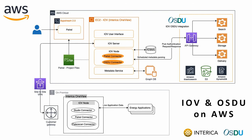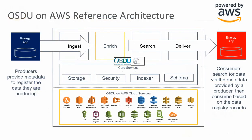Interica's IOV is integrated with OSDU on AWS to seamlessly search and deliver data stored in OSDU, making it available to end customers through the IOV platform. OSDU on AWS is inherently secure and is differentiated because of the seamless integration and robustness of the AWS cloud services built on the AWS well-architected framework pillars. The first pillar is operational excellence: OSDU on AWS provides a single-click deployment into your AWS environment so you spend less time managing resources and more time focusing on delivering value.